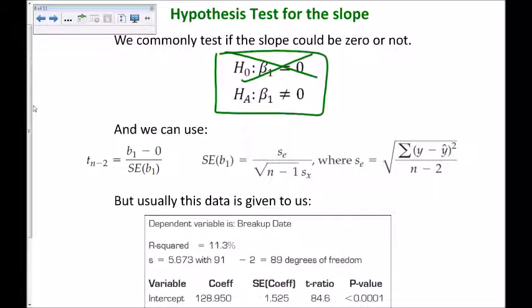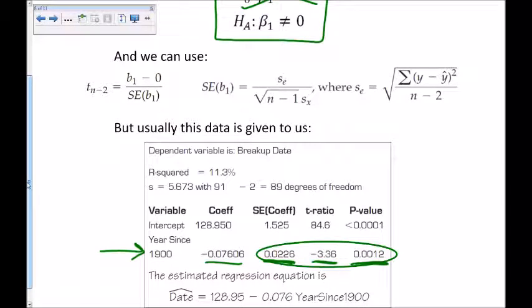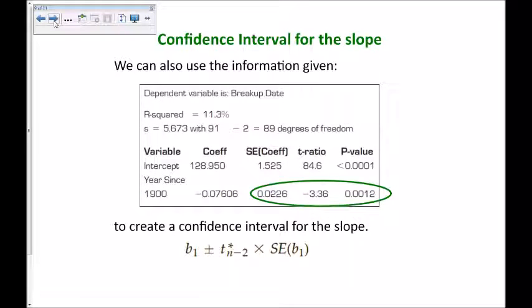This p-value is low, and so we would reject the null hypothesis and conclude that the slope would not be zero. Which means that there is an association between the x and the y variables.